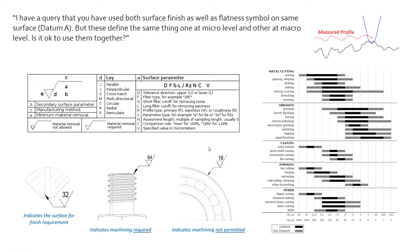The short answer is yes, you can use them together. If we have a surface that we want to machine, we can have that surface finish defined as well as hold that same surface to a certain amount of flatness, and one would not be overriding the other. To start understanding this, let's take a look at what surface finish is.